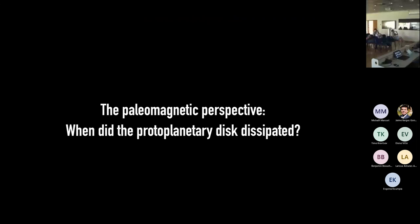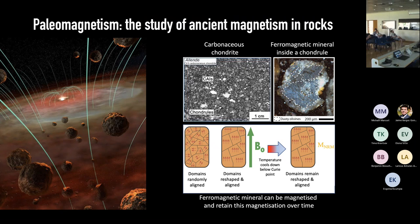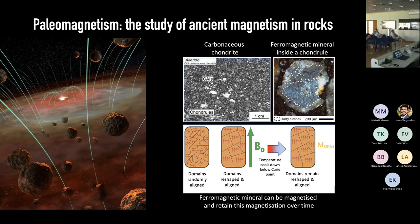I'd like to talk about a different field of research about meteorites that I think is very interesting: paleomagnetism. 'Paleo' just means old and 'magnetic' means magnetic, so it's the study of ancient magnetic fields recorded in meteorites. This field can address very important questions about the evolution of our protoplanetary disk, and in particular the timing of the dissipation of the protoplanetary disk in our solar system. There is very good evidence that some meteorites were magnetized in the protoplanetary disk due to the motion of charged particles that sustained a large-scale dynamo.